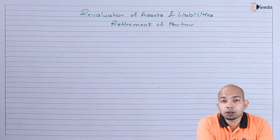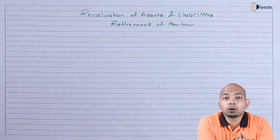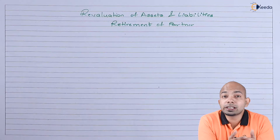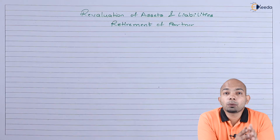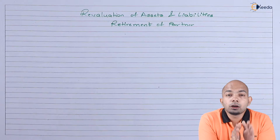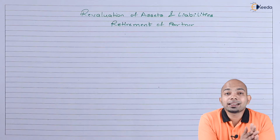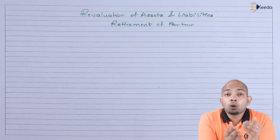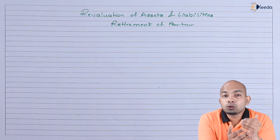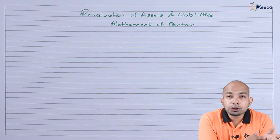The revaluation account can also be called the profit or loss adjustment account. It is an autonomous account which will get closed whenever the profit or loss is calculated. Once this process is done, this account gets closed and certain journal entries have to be passed. We'll be studying how to get the revaluation of assets and liabilities done.